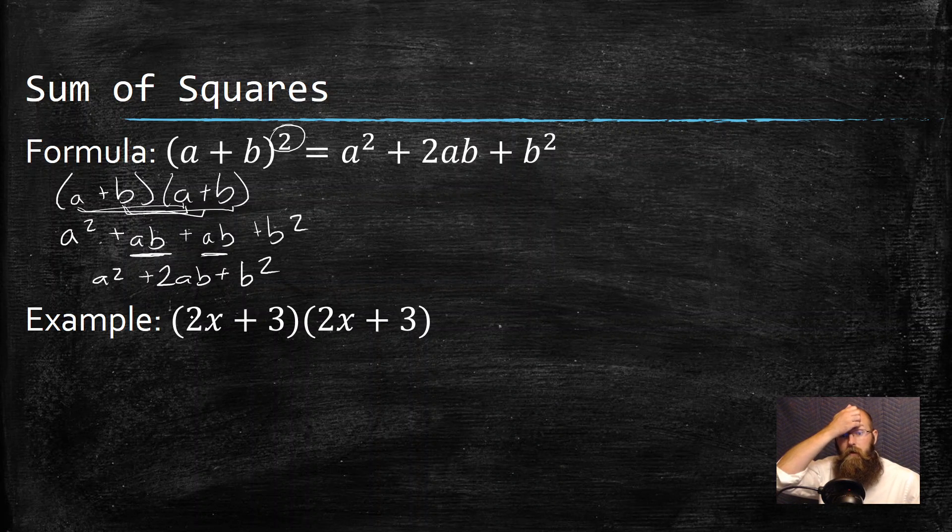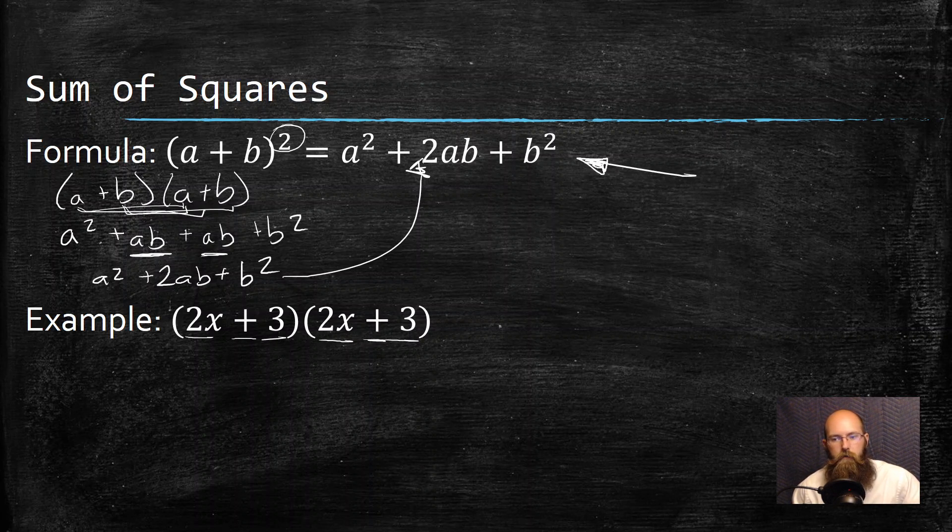Which is kind of nice now, right? That is this formula, but it just means I can clean some stuff up. Instead of distributing all this out, I could notice, oh, that's the same as this 3 and 3, and they're both pluses in the middle. Awesome. That means I can use this formula and do a little bit of a cheat.